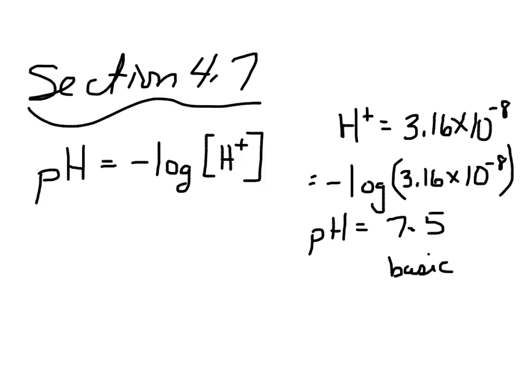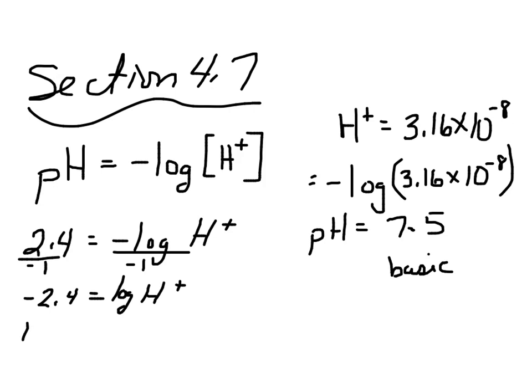If it gives you the pH level, like for instance, they say that the highest recorded rainfall ever, or most acidic rainfall ever recorded, was in Scotland in 1974, which had a pH of 2.4. So now we're trying to find that H plus. So the first thing you're going to do is you're going to divide by negative 1. So you get negative 2.4 equals log of H plus. And then you rewrite that as an exponential, which means 10 to the negative 2.4 equals H plus.